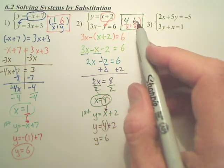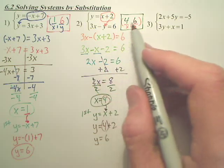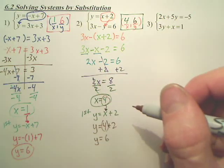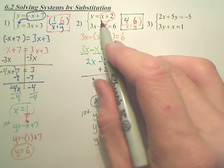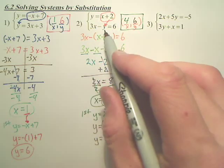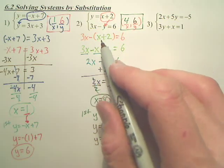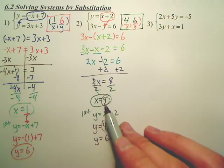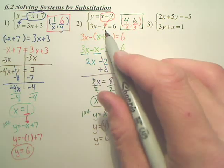4, 6. If I was to graph both these, they cross at 4, 6. So again, I took what y equals, plugged it into the other equation, solved it. I took my answer, plugged it into one of these two. Whichever one's easier.